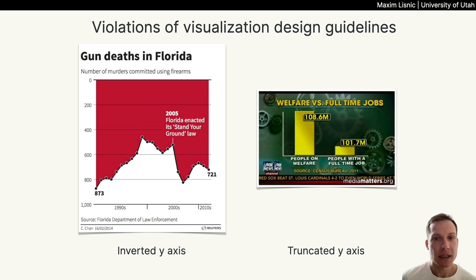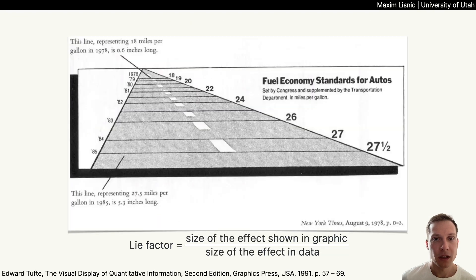But why do we always see the exact same charts when we talk about deceptive visualizations? Well, this can probably be traced back to Edward Tufte and his notions of graphical integrity and lie factor. Hopefully everybody has seen such prototypical examples — where if a chart shows one line to denote 18 miles per gallon but a different line to denote 27.5, we call it lying. Much research has followed up on these ideas, and to this day we're studying the effects of the lie factor on human perception.